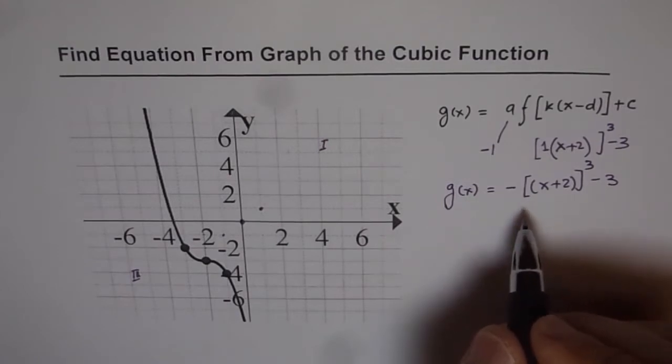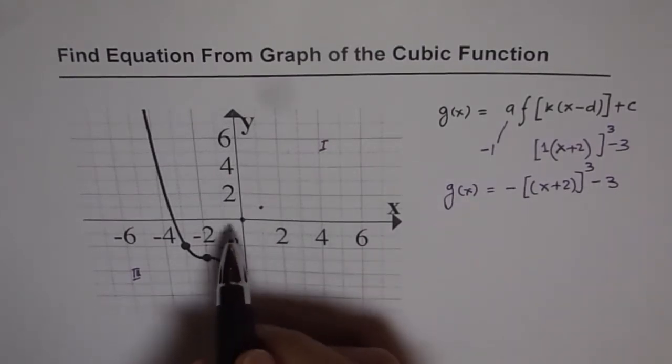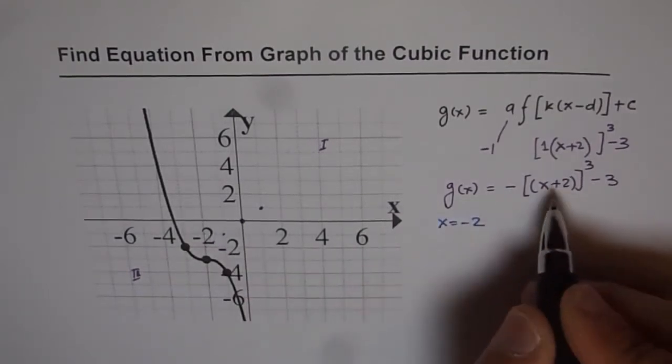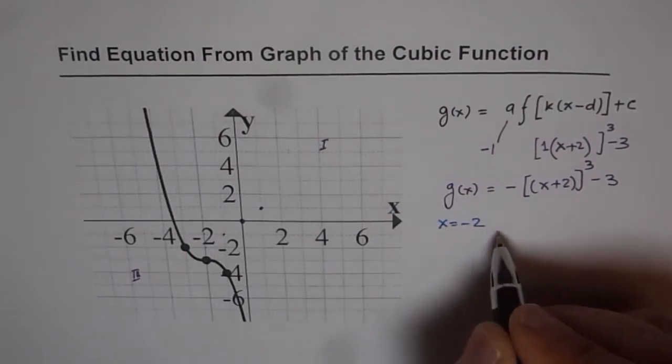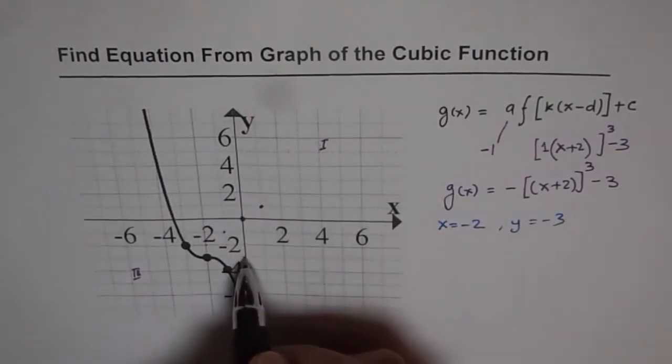It is a good idea to test your points at this stage. So let us test them by writing x equals minus 2. If I write x equals minus 2 here, what do I get? Minus 2 plus 2 is 0. Cubed will be 0. I get y value of minus 3. So minus 2 minus 3.